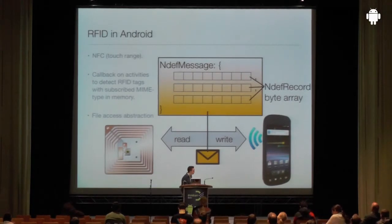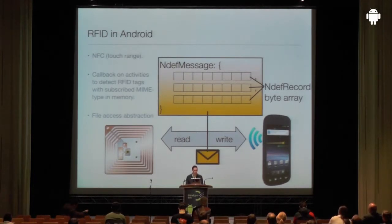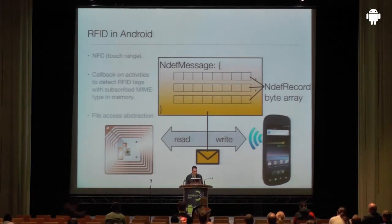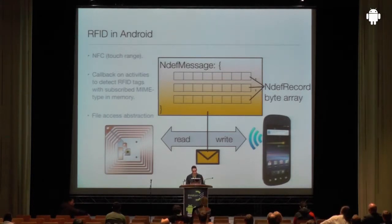First, RFID in Android — what is the status? RFID technology in Android is adopted through near-field communication, which is a technology with a very close range, up to a few centimeters, but in practice usually touch range. The Android API provides abstractions to work with NFC tags and write data using NDEF messages. An NDEF message is a standardized protocol to organize and store data on a tag — it's a container for NDEF records, which are essentially byte arrays.